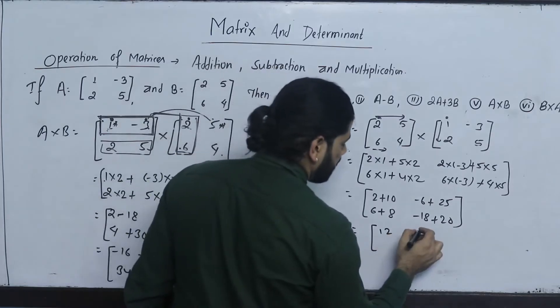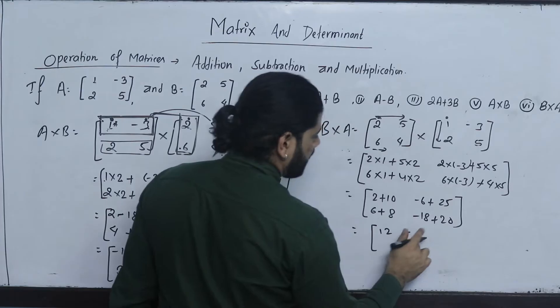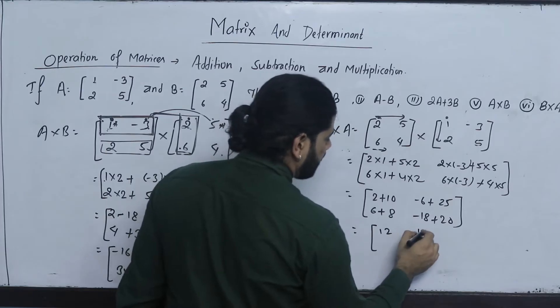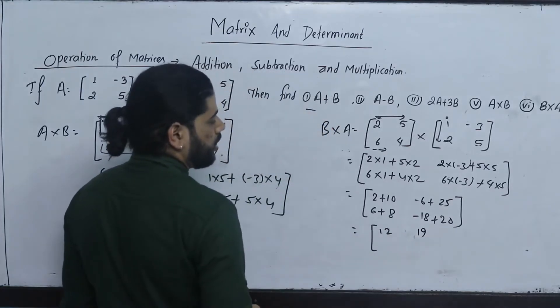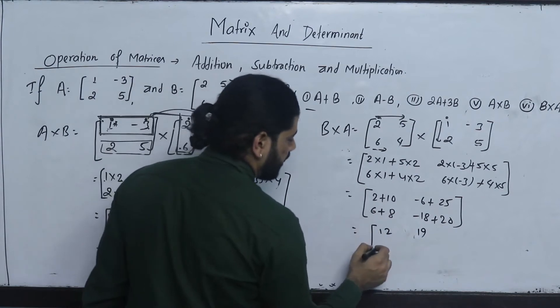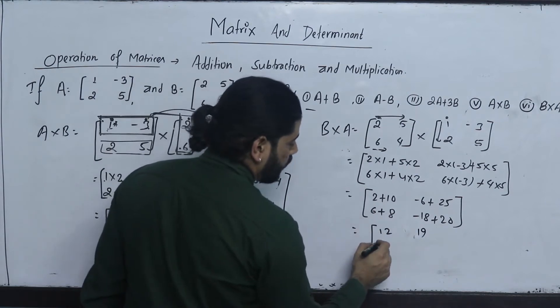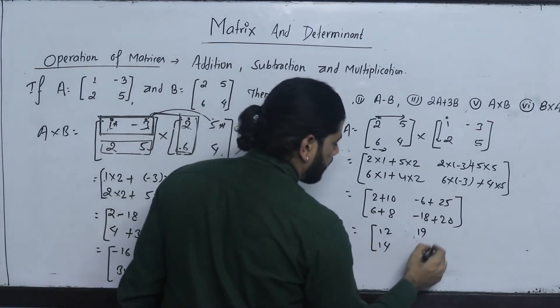Result is 25 minus 14 — sorry — 19, and then 6 plus 8 gives 14. So the values of B into A are obtained.